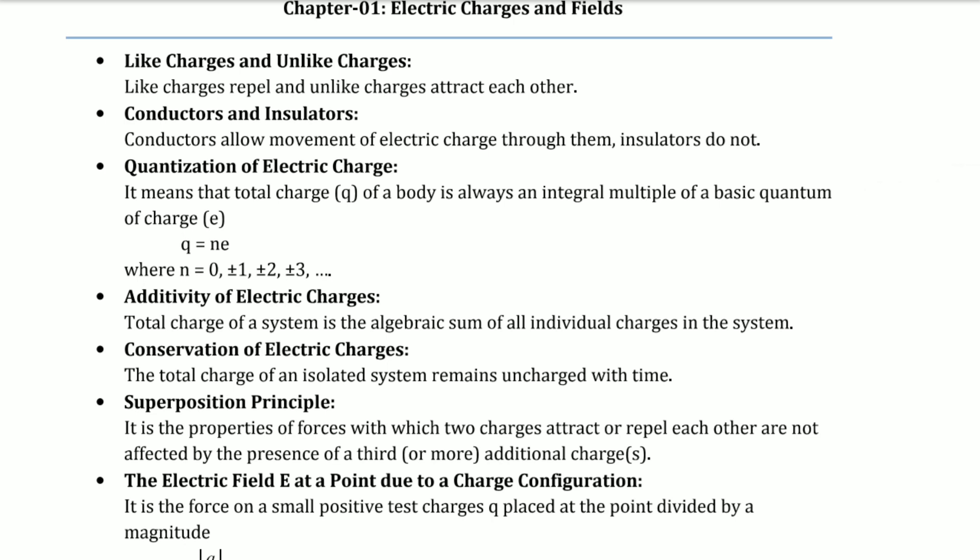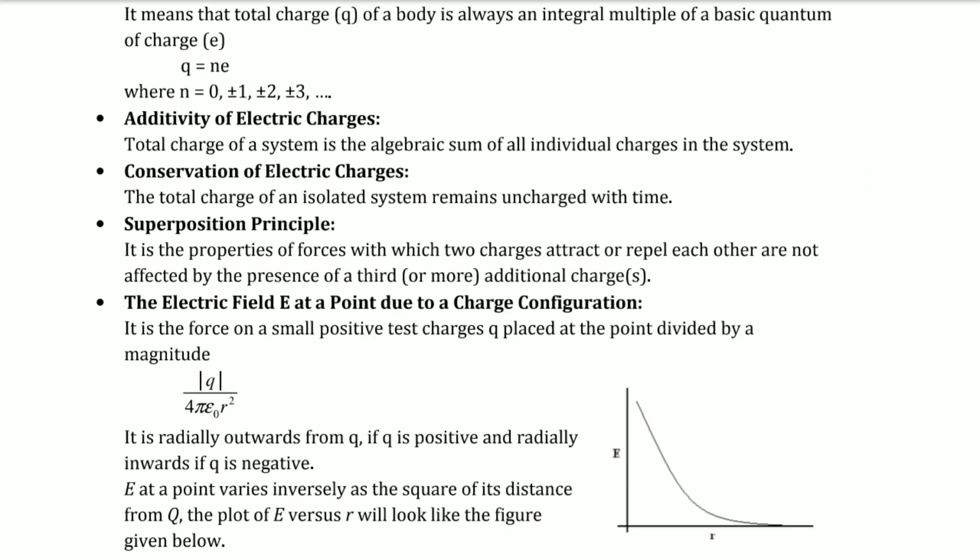Quantization of electric charge: The total charge of a body is always an integral multiple of basic quantum of charge e, so q = ne where n = 0, ±1, ±2, ±3... Additivity of electric charge: Total charge of a system is the algebraic sum of all individual charges. Conservation of electric charges: Total charge of an isolated system remains unchanged with time.